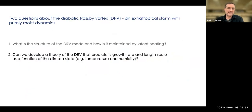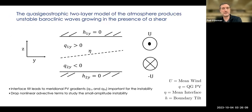That's some phenomenology of the diabatic Rossby vortex and how it maintains itself. We now want to talk about a theory for this diabatic Rossby vortex that predicts its growth rate and length scale as a function of the climate state. We work with the quasi-geostrophic two-layer model, which is another classic model for baroclinic instability, and it will produce unstable baroclinic waves growing in the presence of shear.